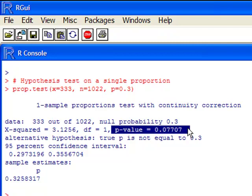Now, whether this is significant or not depends on your significance level that you chose for your test. But this is where you would go and look for the value for that. Notice above this, it says the null probability of 0.3, so that's the null hypothesis. And notice right below it, it says true p is not equal to 0.03. So this is a two-sided test.